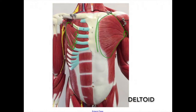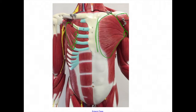Here we see a little bit of the deltoid. The origin is the clavicle, acromion process, and spine of the scapula. The insertion is the deltoid tuberosity of the humerus. The action is the whole muscle abducts the humerus; in part it may flex, rotate, and extend the humerus.